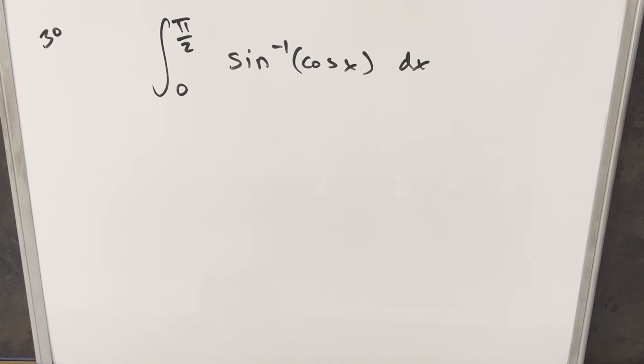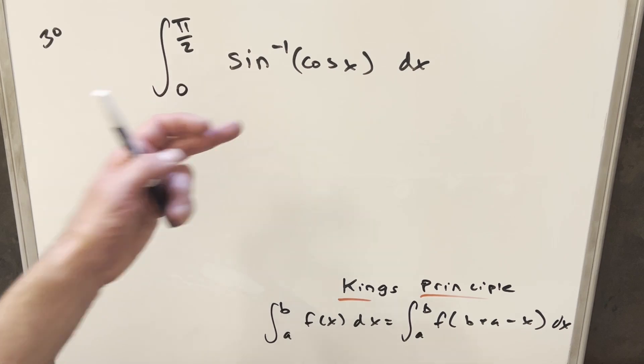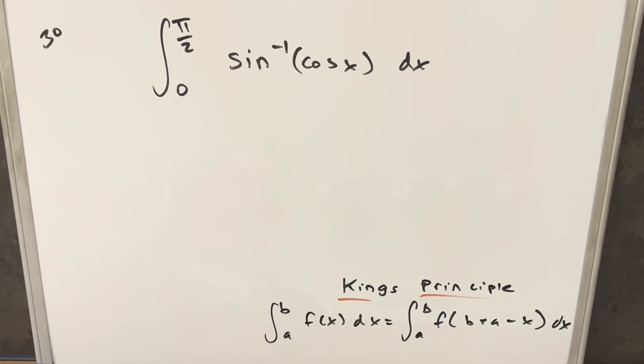I already did a video recently on this, but I was thinking about doing an alternative method video, and here it is. I just want to do this using King's Principle. We have our King's Principle down here on the right. This tends to work pretty well when you've got bounds like this with trig integrals going from 0 to pi over 2.